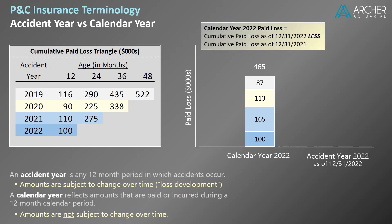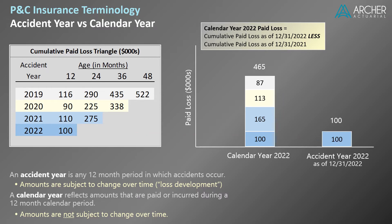In summary, calendar year 2022 paid loss equals the cumulative loss paid through 12-31-2022 less the cumulative loss paid through 12-31-2021. Now let's look at the cumulative paid loss for accident year 2022. Since the value of an accident year changes over time, we need to specify the evaluation date, which we selected here as 12-31-2022. This amount simply equals the $100,000 cumulative paid loss at age 12, as of 12-31-2022. Remember that the value for an accident year is a function of time, whereas the calendar year amount, once determined, is fixed.